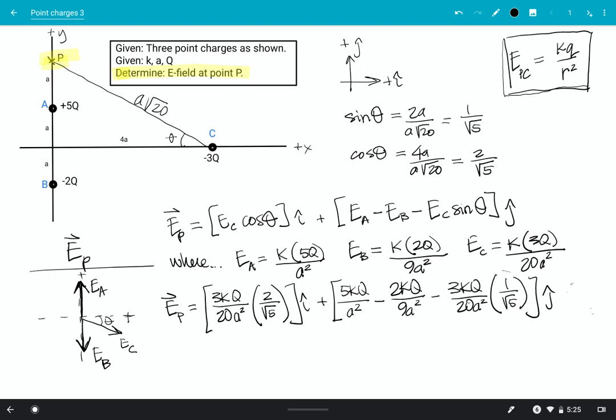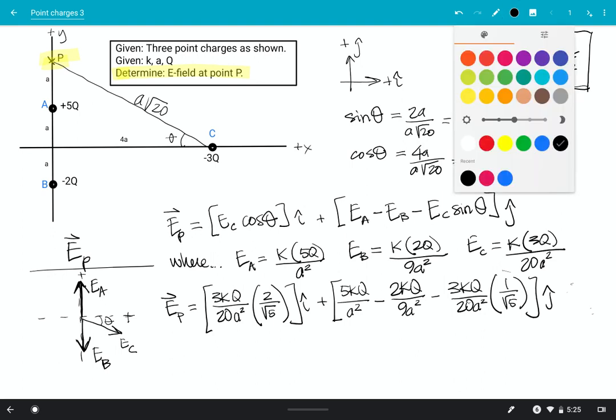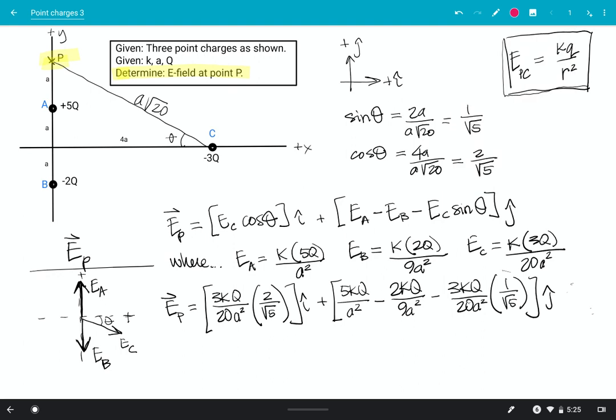So that's it. That is my final answer. I'll change my color, put it in pink to let you know that that's really it. If I look at that, that's in terms of my given stuff. My givens were up here, K, A, and Q. So that is determining there the electric field at point P due to those three charges.